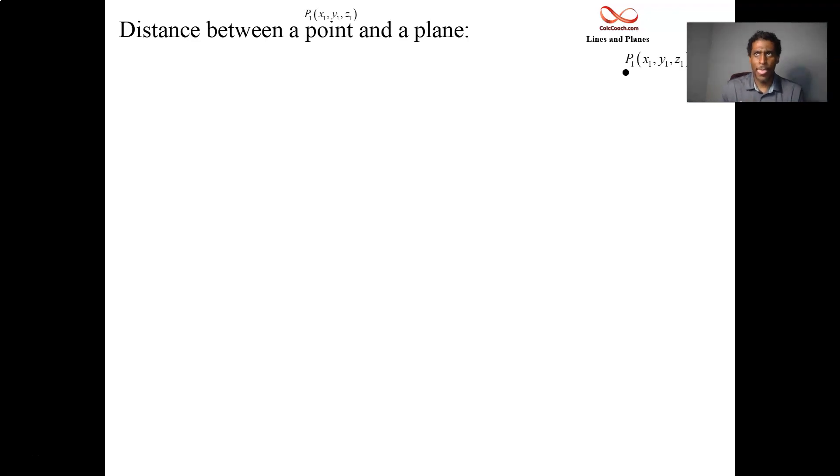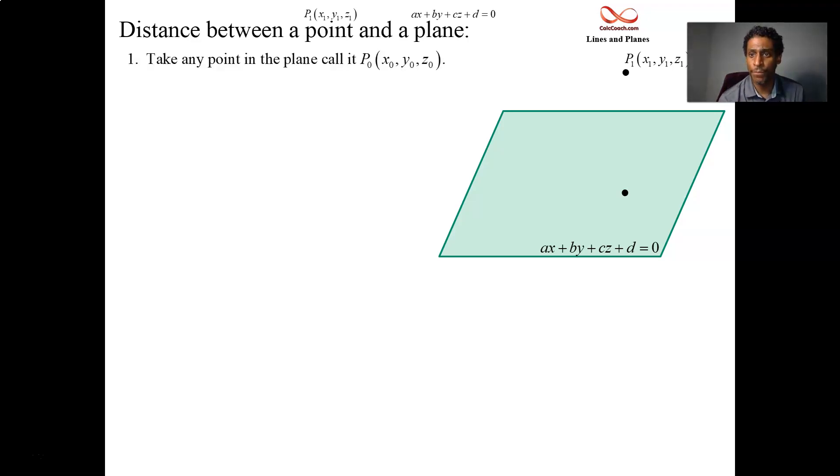So I have a point, call it P1, and I have a plane, generically call it AX plus BY plus CZ plus D equals zero. Now, there's infinitely many distances that go from the point to the plane. So what is the distance between the point and the plane? It's going to be this perpendicular drop-down distance here, the shortest distance.